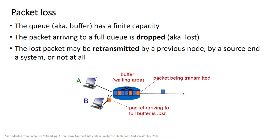If a router doesn't respond, it shows as a lost probe. The queue, also known as a buffer, has finite capacity — you cannot put infinite memory into any device. Packets arriving at a full queue are dropped (lost). Lost packets may be retransmitted by the previous node, by the source, or not at all. If the buffer is full and you retransmit, the packet is directly lost again.